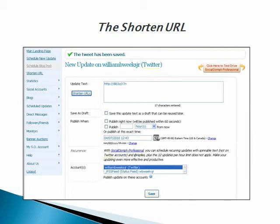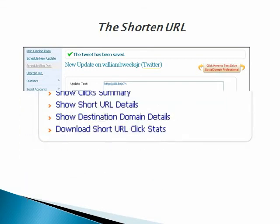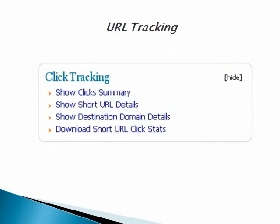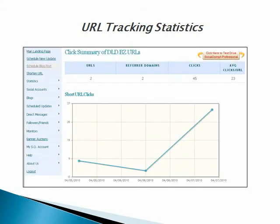This is a nice feature in Social Oomph because it allows you to track clicks — essentially an analytics program is built in. You go to click tracking and the tracking statistics come up. You can see how many people are actually following that particular URL, which is a nice way to see what kind of traffic you're getting and whether people are actually looking at your content.